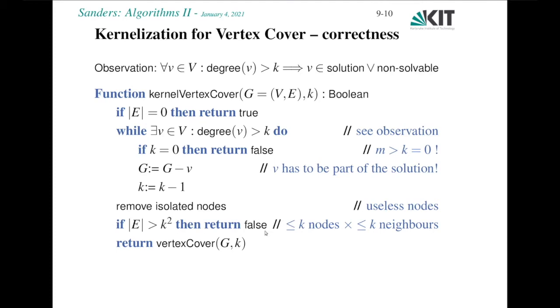Here we have to look a little bit more closely. Why is this a rule for rejecting the instance? Recall that we have removed all the vertices with degree larger than k, which means now we have a graph with maximum degree k. This implies that any vertex that is left can cover at most k of the remaining edges. But we can select only k of them, so we can at most cover k squared more edges. If there are more than k squared edges left, then there's no way to solve this problem.